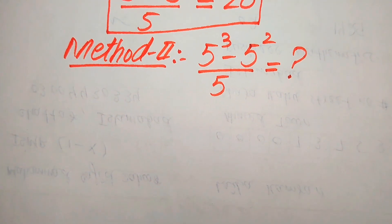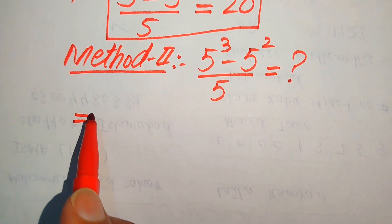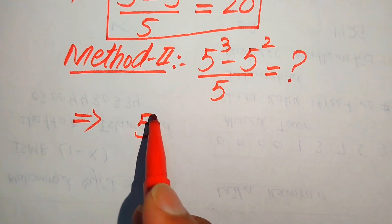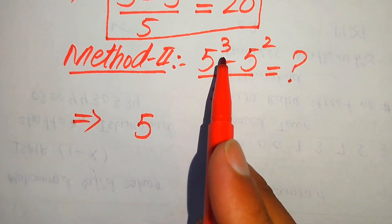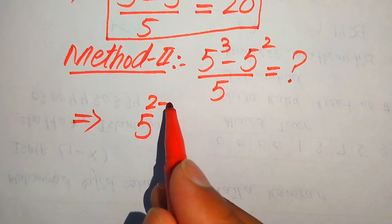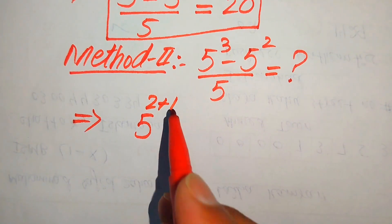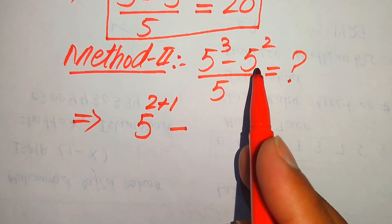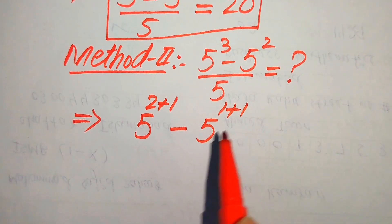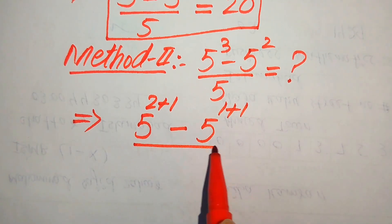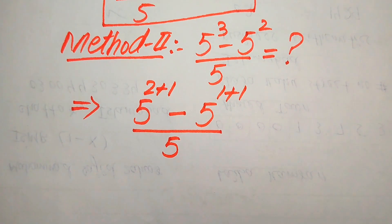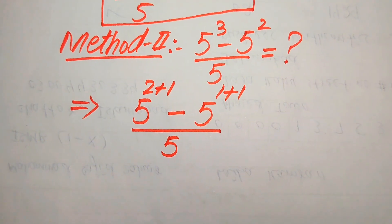In this method we focus on the exponents of the numerator terms. We write 5 cubed as 5 to the power of 2 plus 1, and 5 squared as 5 to the power of 1 plus 1, all divided by 5.